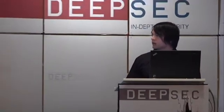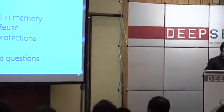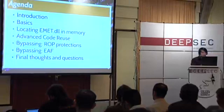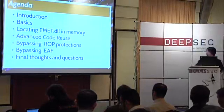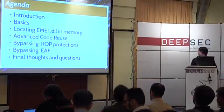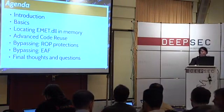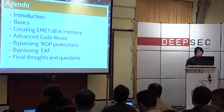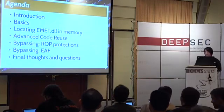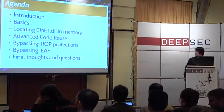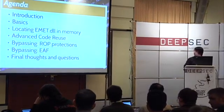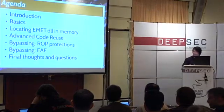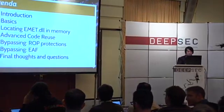I will show the advanced code reuse technique in a whole chapter. It's a technique which is already publicly known, but quite useful when exploiting the mitigation techniques of EMET. Then I'll cover the five different return-oriented programming protections and the export address table access filtering protection and how to bypass them. From a technical perspective the other protections are quite easy to bypass, so I focus on the interesting ones. At the end you'll have time to ask questions.